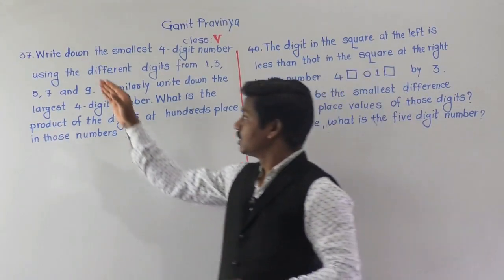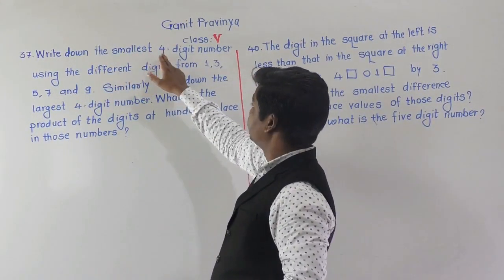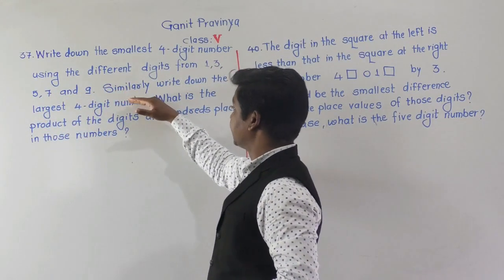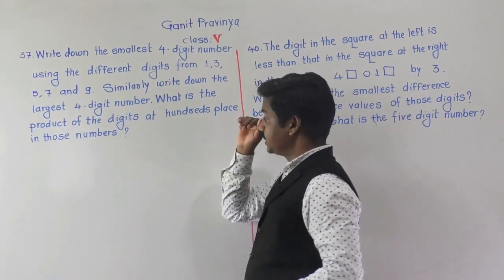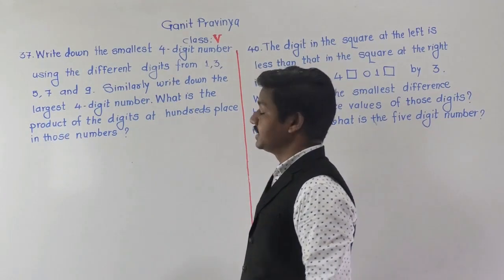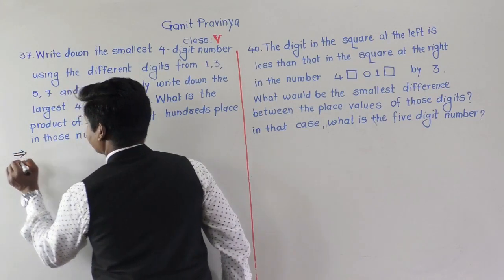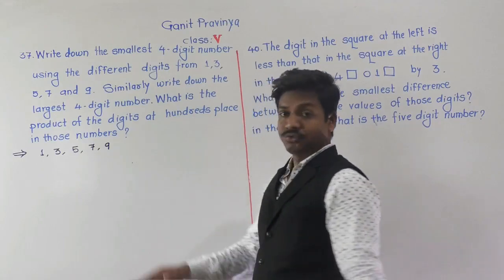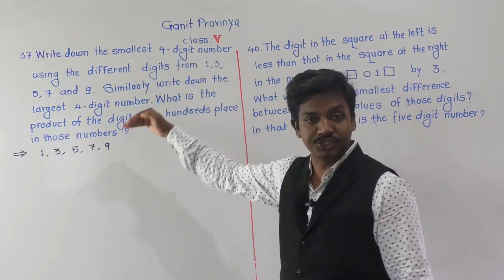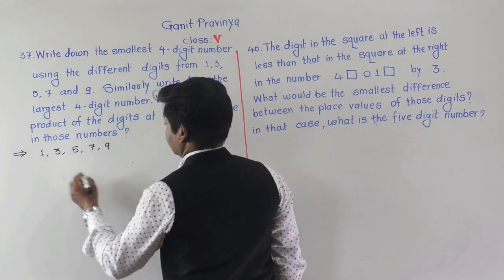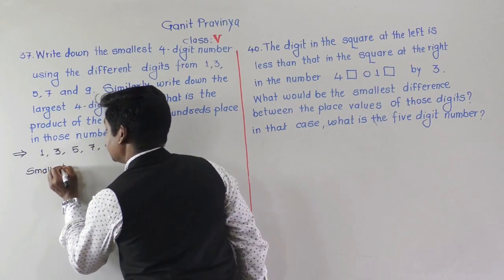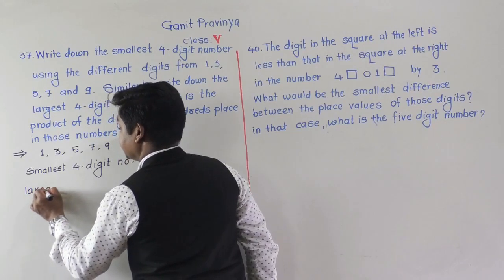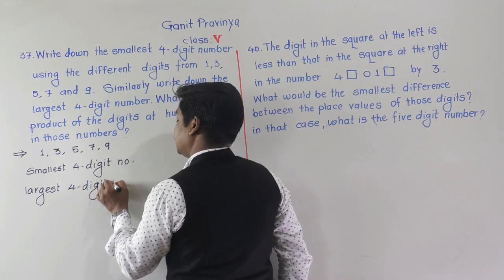Let's move to question number 37. Write down the smallest 4-digit number using different digits from 1, 3, 5, 7 and 9. Similarly, write down the largest 4-digit number. What is the product of the digits at the hundreds place in those numbers? Five digits are given — 1, 3, 5, 7 and 9 — and we must form both smallest and largest 4-digit numbers.